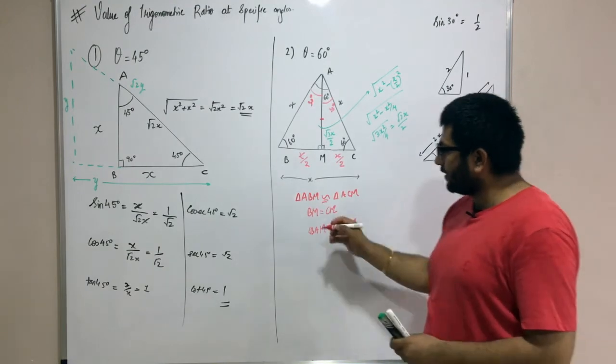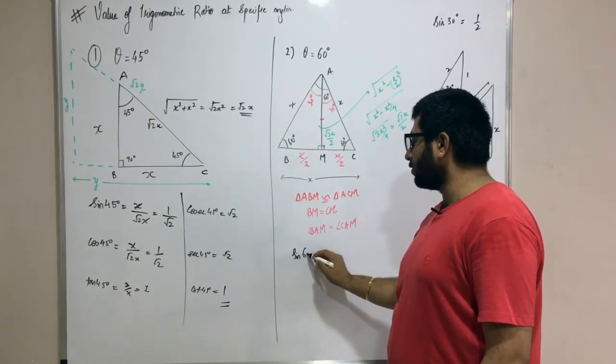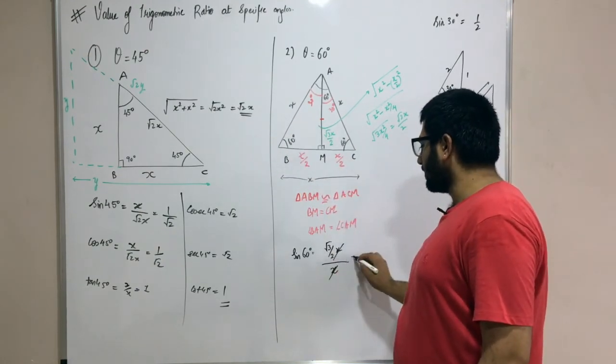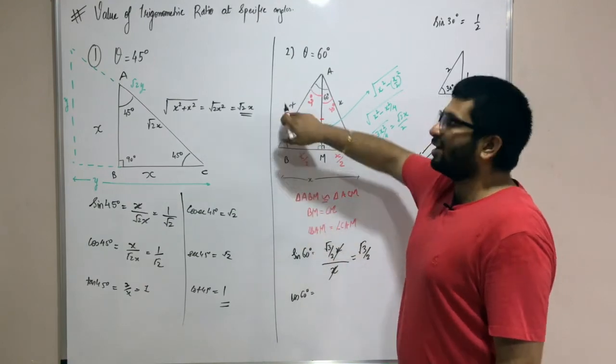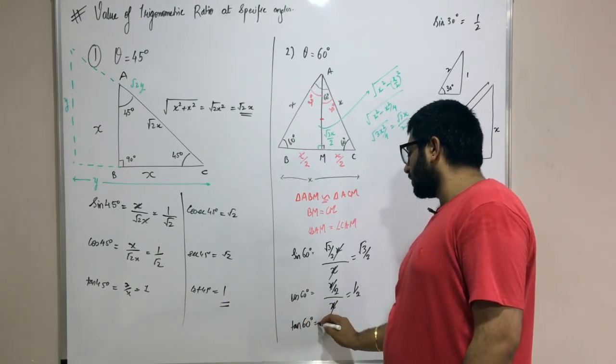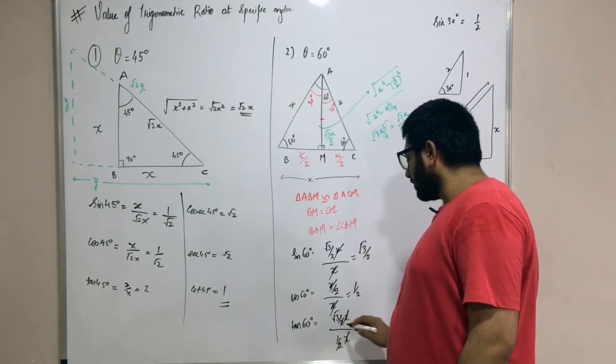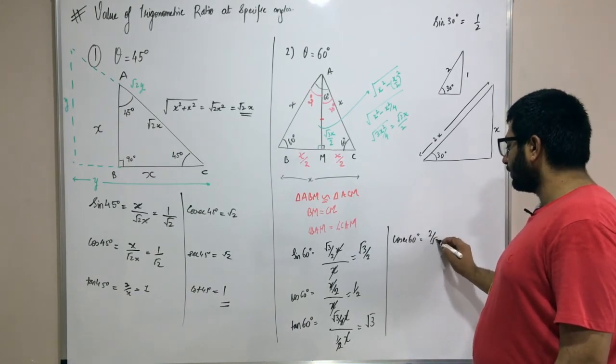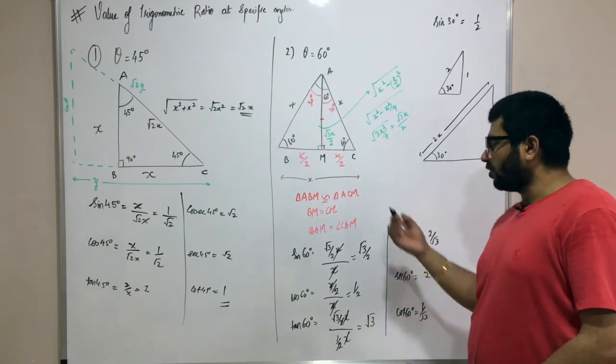Let's find out the trigonometric ratio values. Sine of 60 degrees is opposite over hypotenuse: (root 3x/2) over x, which simplifies to root 3 by 2. Cos of 60 degrees is adjacent by hypotenuse: (x/2) by x, which becomes one by two. Tan of 60 degrees is opposite by adjacent: (root 3x/2) over (x/2), which simplifies to root 3. If you have sine, cos, and tan, you can find the reciprocals. Cosec of 60 degrees is 2 by root 3, sec of 60 degrees is 2, and cot of 60 degrees is one by root 3.